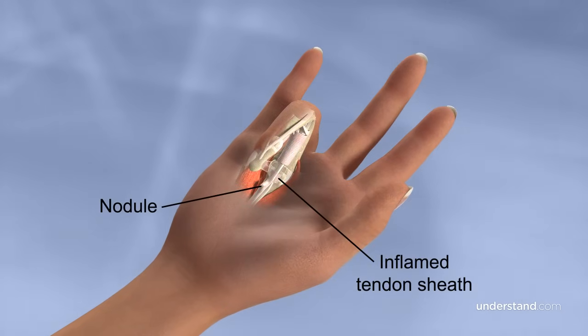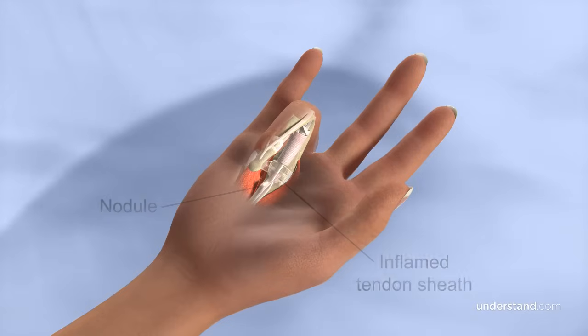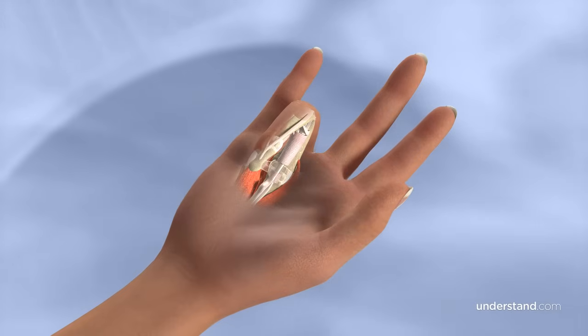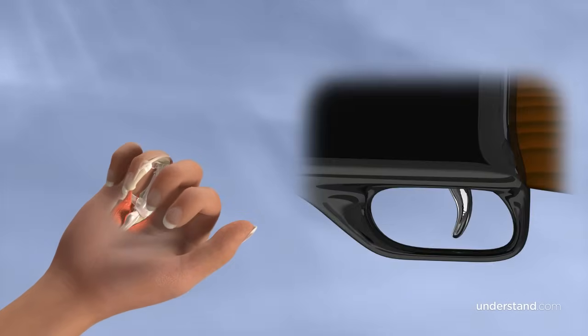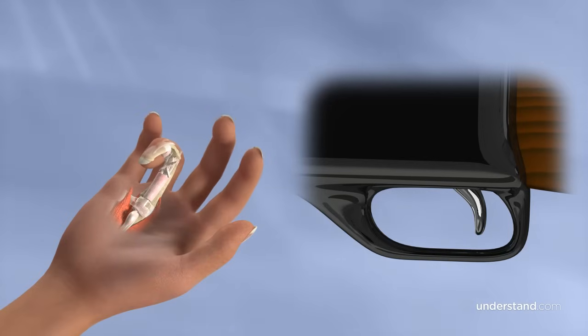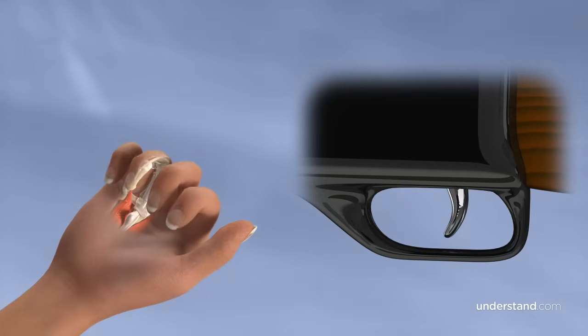The thickened tendon and inflamed sheath can prevent smooth gliding during motion, resulting in a popping or catching sensation while attempting to extend the finger from the palm. The name trigger finger stems from the observation that the bent finger may suddenly release, similar to the trigger motion when firing a gun in which the pulled trigger tightens and suddenly releases right before firing.